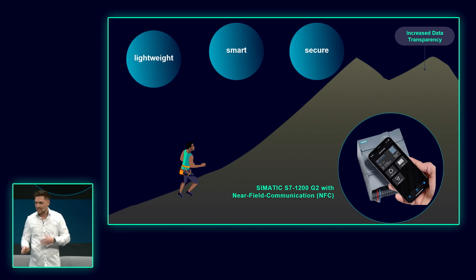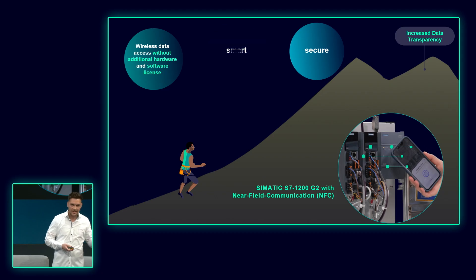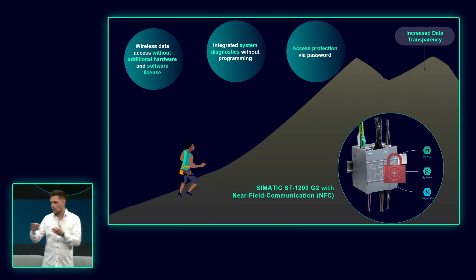This allows you to have access to diagnostic data, operational data, device data and so on. Why is this lightweight? We offer wireless data access - no additional hardware needed and no additional license needed. You just download an app from the App Store onto your mobile device, scan the CPU and have access to this kind of smart data. Smart data - I speak of integrated system diagnostics that are available without any programming effort. All our SIMATIC components offer this integrated system diagnostics. This is available on the TIA Portal, on an HMI for example, and now also on the app if you scan the device, if you scan the CPU. And of course this is secure. We have on the one side access protection via password, and we are talking of near-field communication, which means you need physical access to the device.